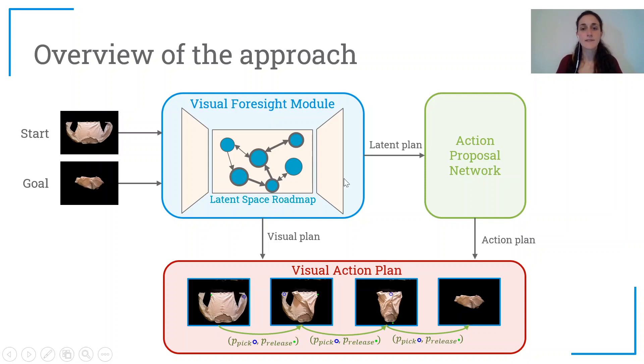And in addition, it also produces the latent plan, that's the sequence of points in the latent space that lead from the start to the goal configurations. And given this latent plan, we have a further module that we call Action Proposal Network that generates the action plan.